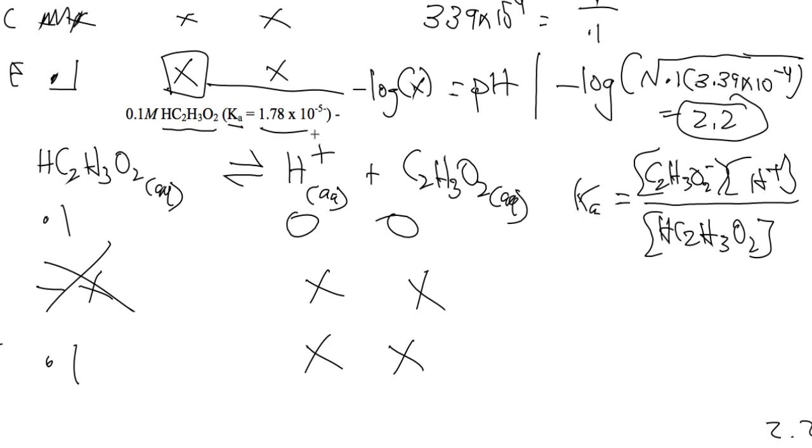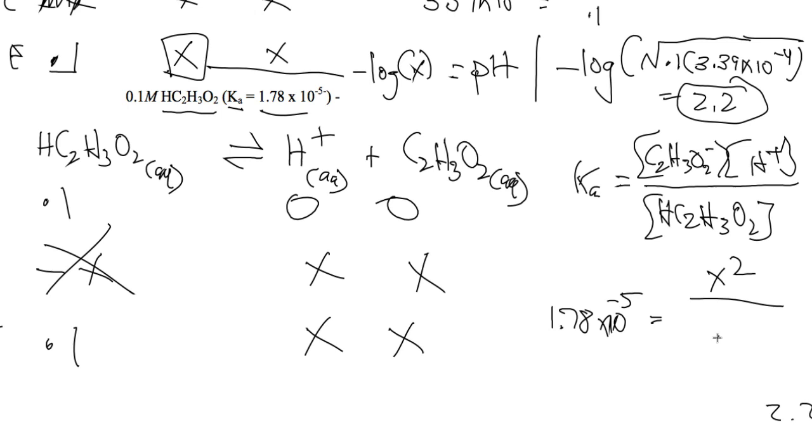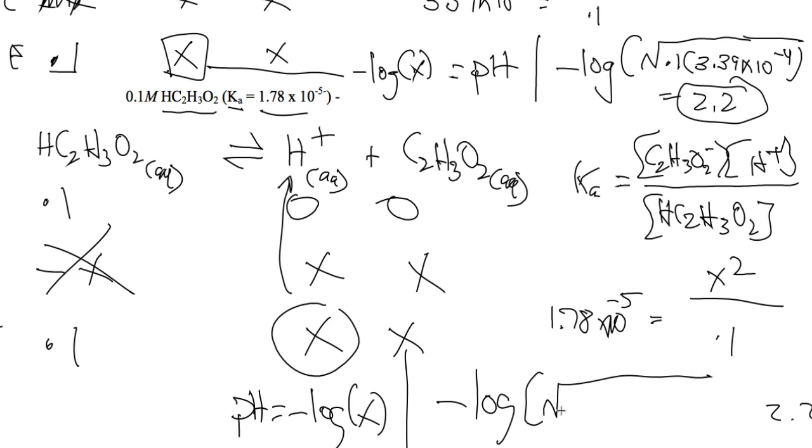We then plug our numbers in. 1.78 times 10 to the minus 5th is equal to X squared over 0.1. So if that's X and that's H plus, pH equals the negative log of X. So X is defined as the square root of 0.1 multiplied by 1.78 times 10 to the minus 5th. And the pH is going to be around 3 in this case.